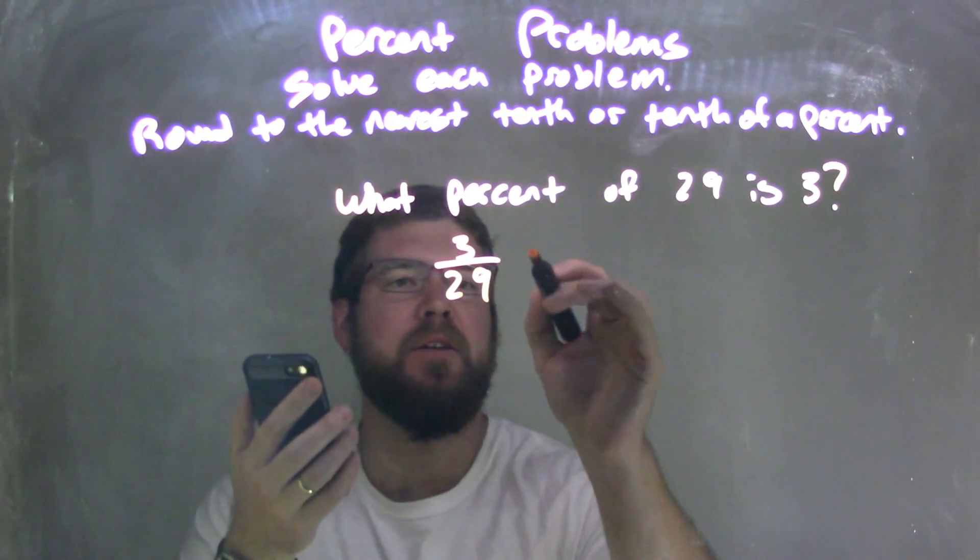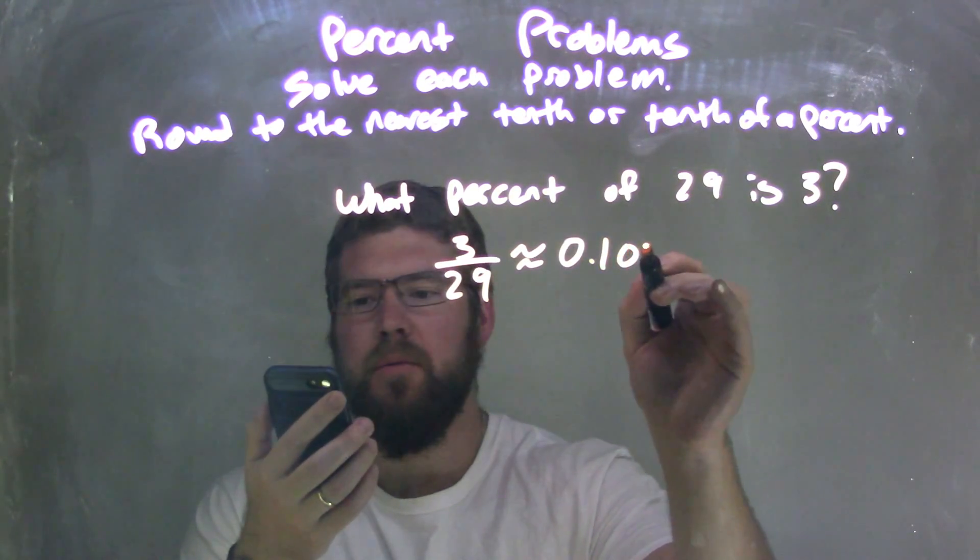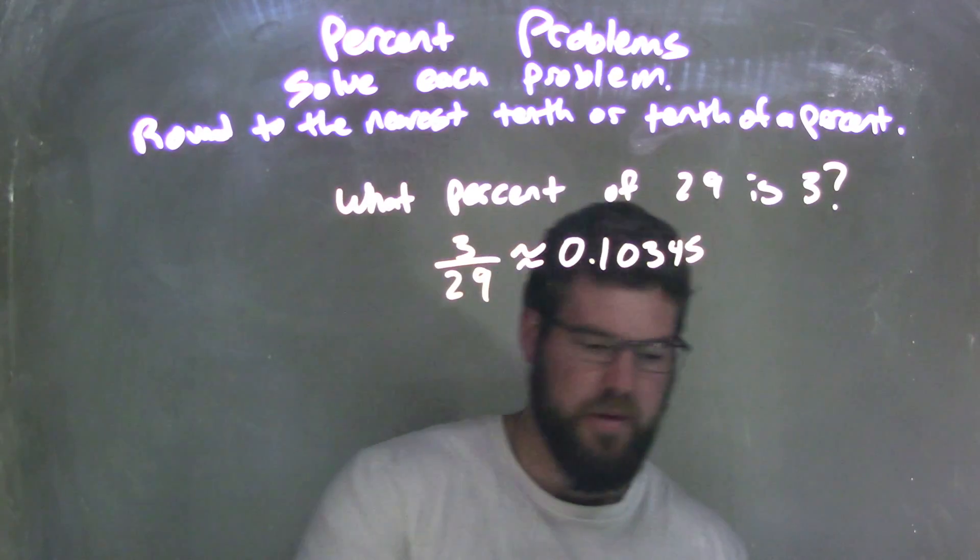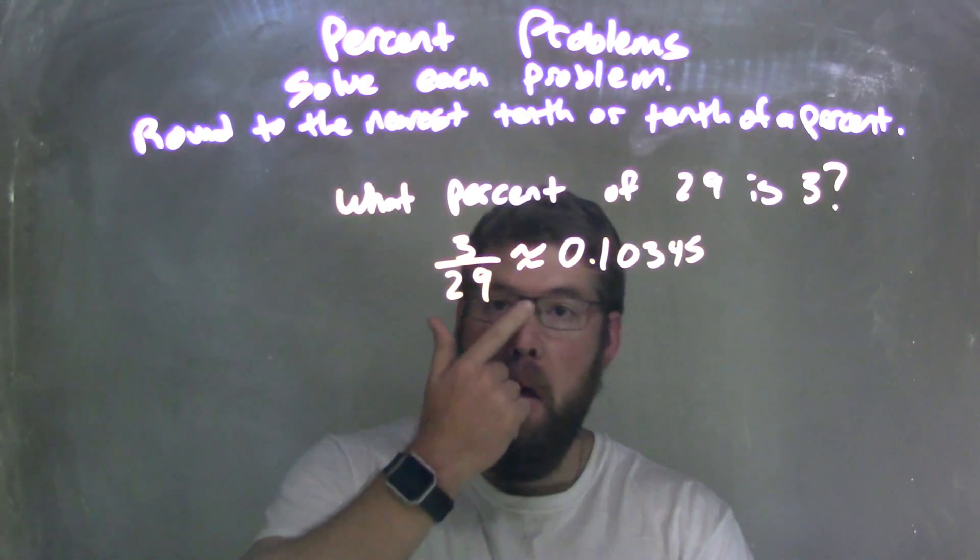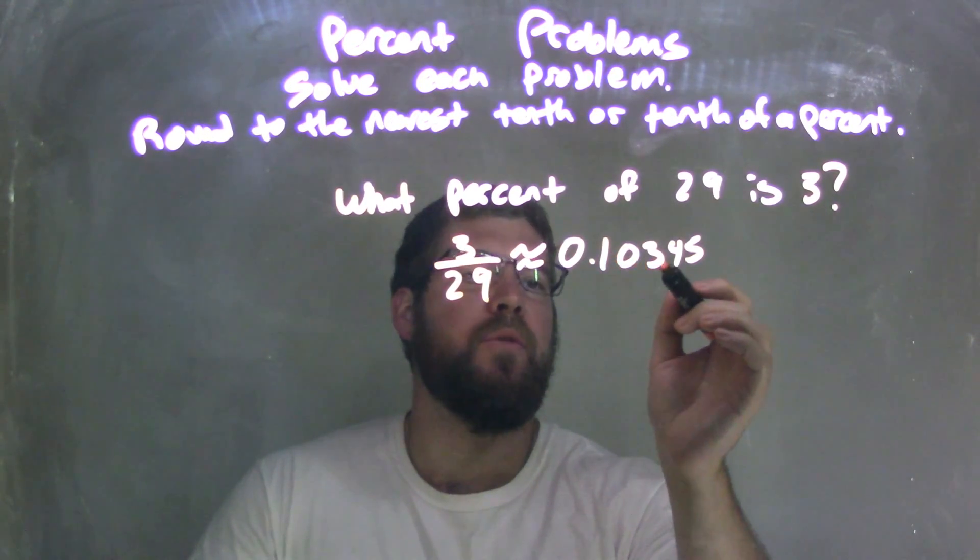my calculator comes out to be approximately 0.10345. So 3 divided by 29 is approximately 0.10345.